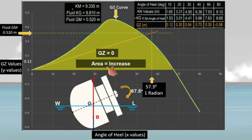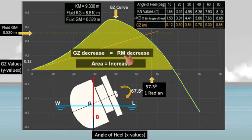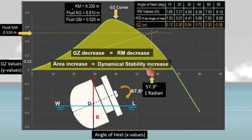Remember that if the righting lever decreases, the moment of statical stability also decreases. And if the area under the GZ curve increases, the dynamical stability also increases. Even if there is a decrease in the moment of statical stability, an increase in dynamical stability means that more work must be done to incline the vessel — it requires more energy for external forces to heel the vessel. So a larger area under the GZ curve indicates greater dynamical stability, meaning the ship can absorb more energy from external forces without capsizing.